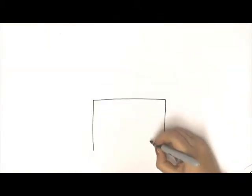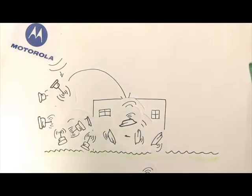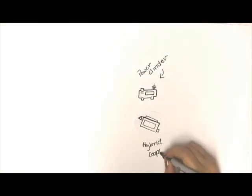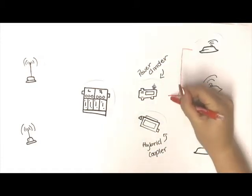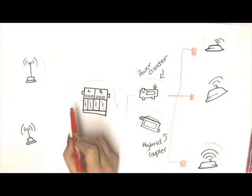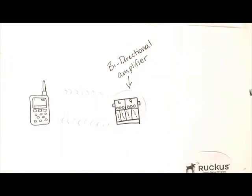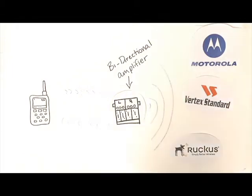The antennas are located both inside to redistribute signals and outside to capture the signals from the macro networks, and can vary in number depending on the size of the desired area of coverage and the number of services needing enhancement. Power dividers and hybrid couplers are used to connect the antennas to the bidirectional signal amplifiers via the cabling infrastructure. These bidirectional amplifiers relay and amplify radio frequency signals, or RF signals, from their respective private or commercial services.